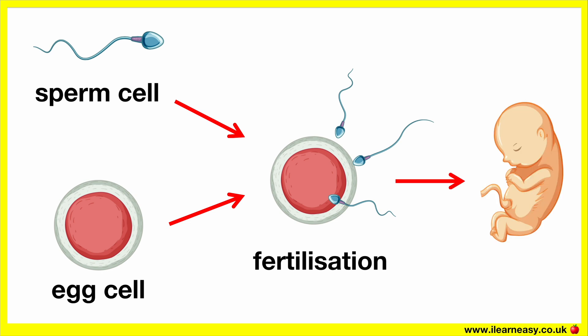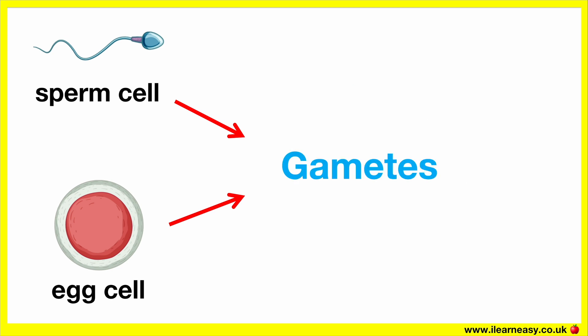Sperm cells and egg cells are known as gametes. Gametes are an organism's reproductive cells. They contain half the genetic information that all our other body cells have. Therefore, they are referred to as haploid.